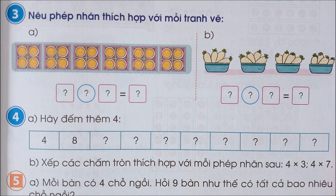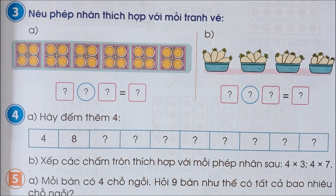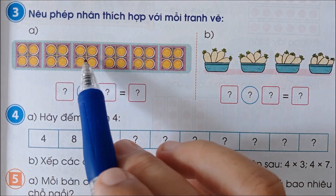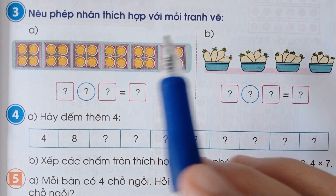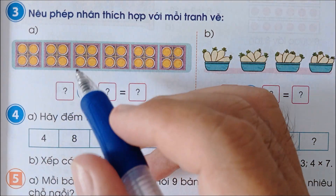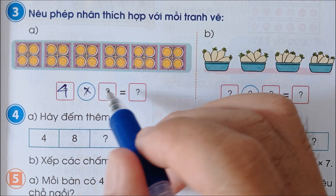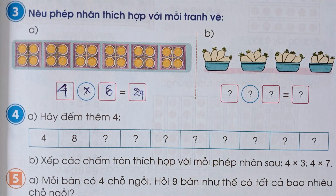Bài số 3: Nêu phép nhân thích hợp với mỗi tranh vẽ. Đếm các chấm tròn: 1, 2, 3, 4, 5, 6 — như vậy 4 x 6 bằng 24.